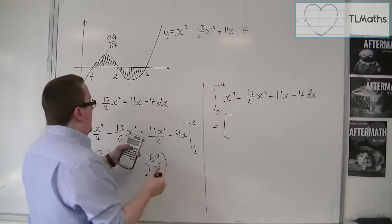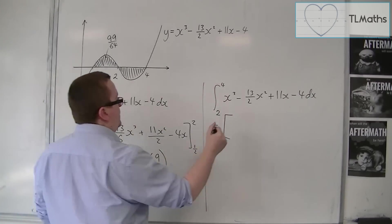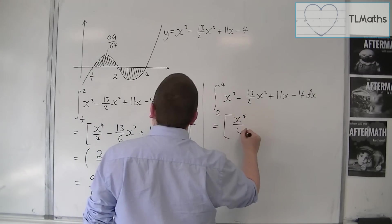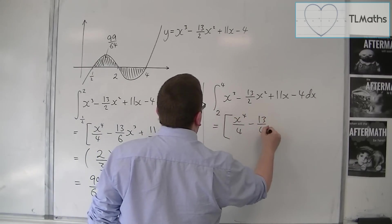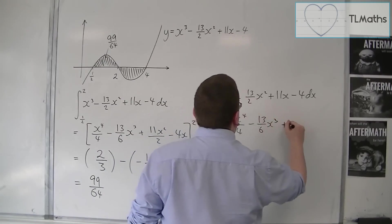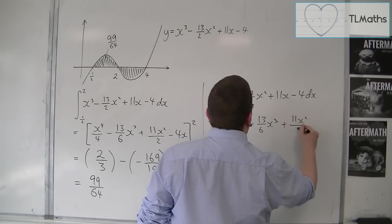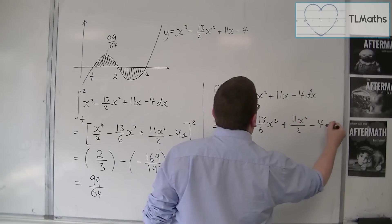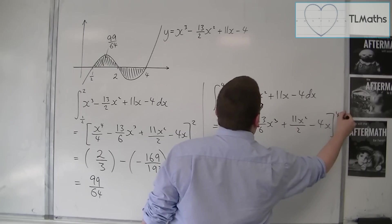So I already have the integral there, so I don't need to do it again. Then x⁴/4 - 13/6 x³, rather, plus 11x²/2, take away 4x, and evaluate it between 2 and 4.